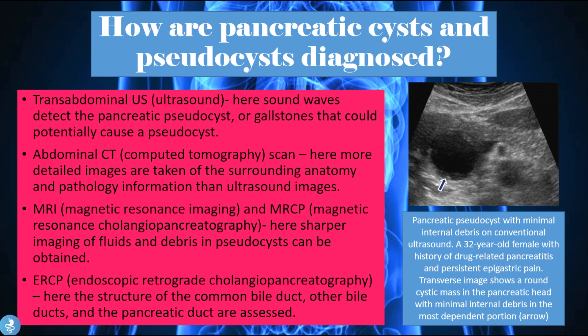In the ultrasound image shown, a pancreatic pseudocyst is seen with minimal internal debris. This is from a 32-year-old female with a history of drug-related pancreatitis and persistent epigastric pain. The transverse image shows a round cystic mass in the pancreatic head with minimal internal debris in the most dependent portion, indicated by the arrow. The pseudocyst is found within the head of the pancreas with minimal debris at the bottom.